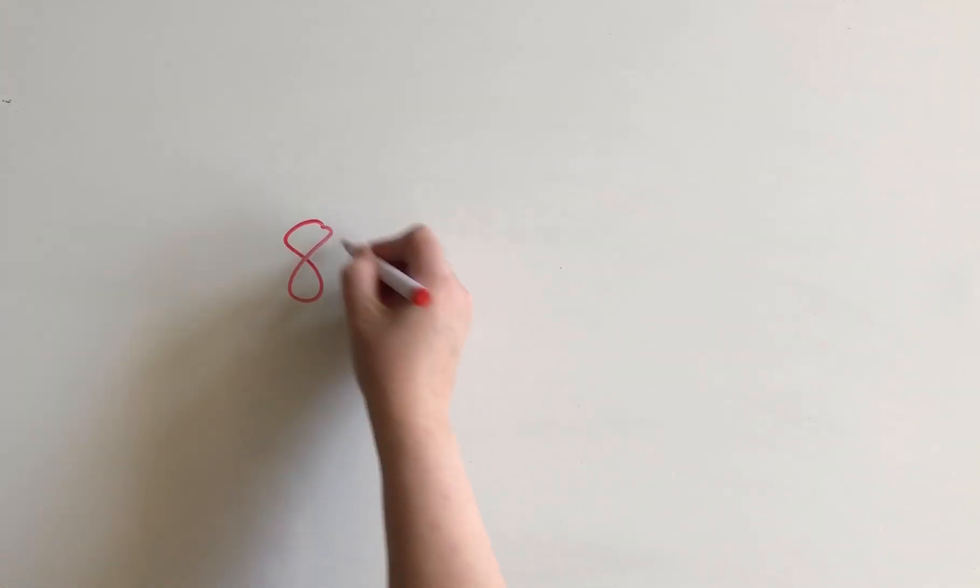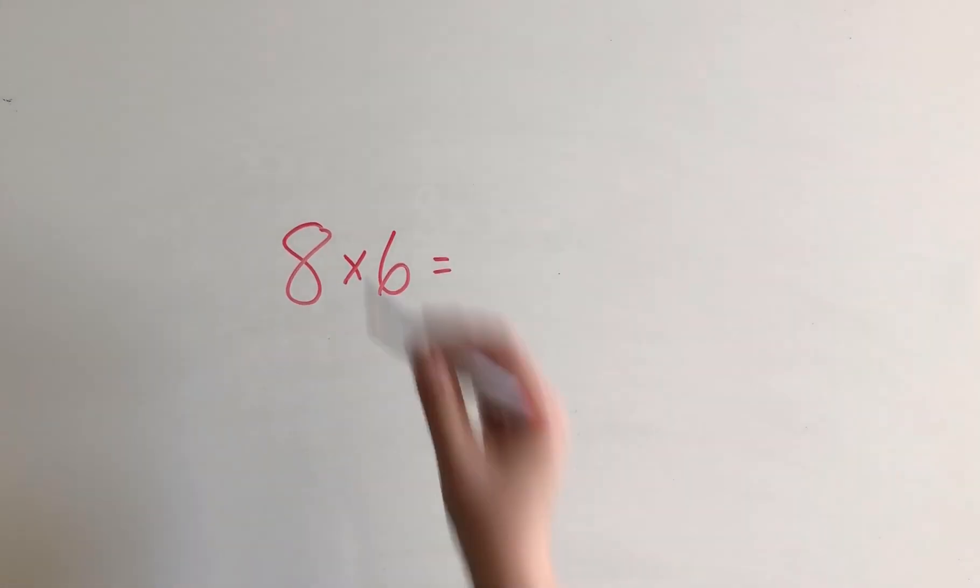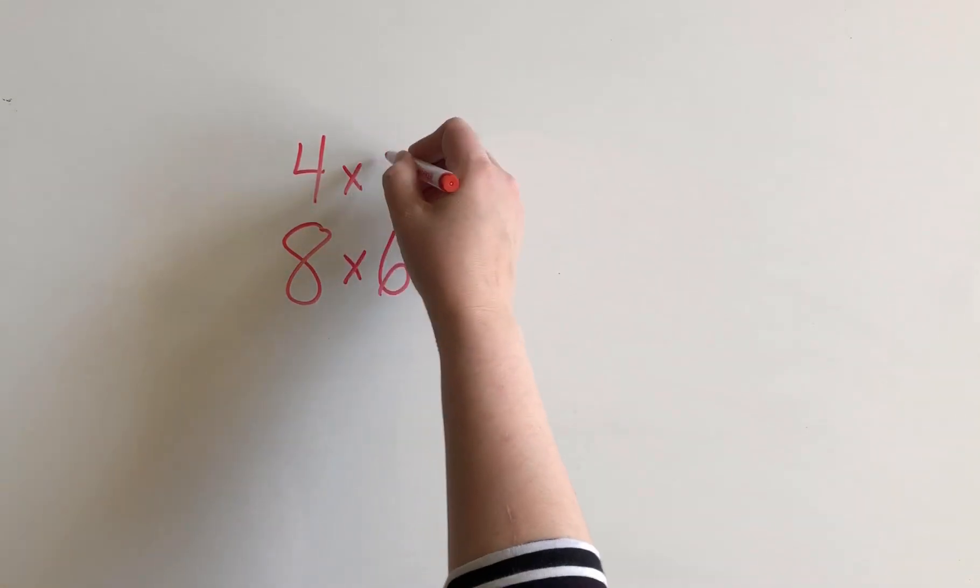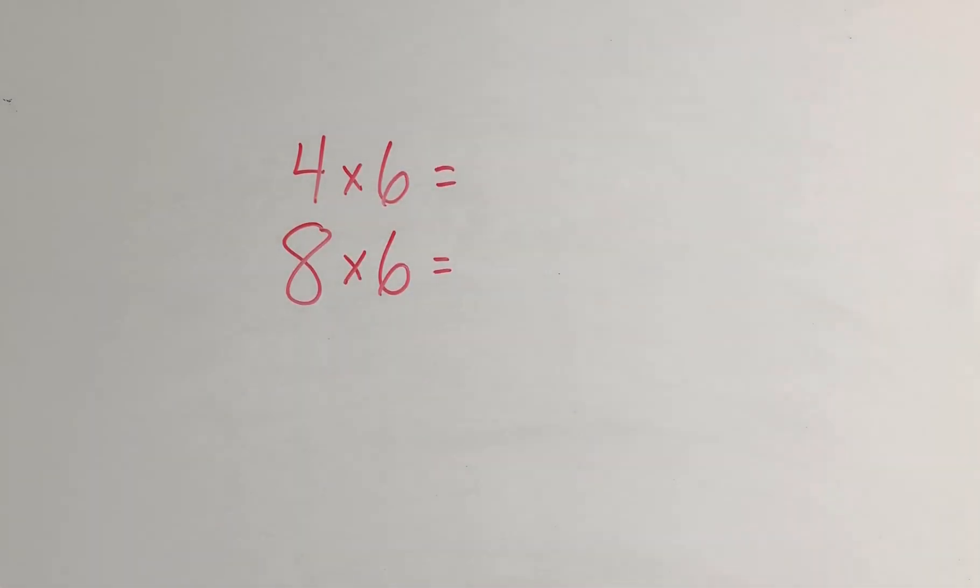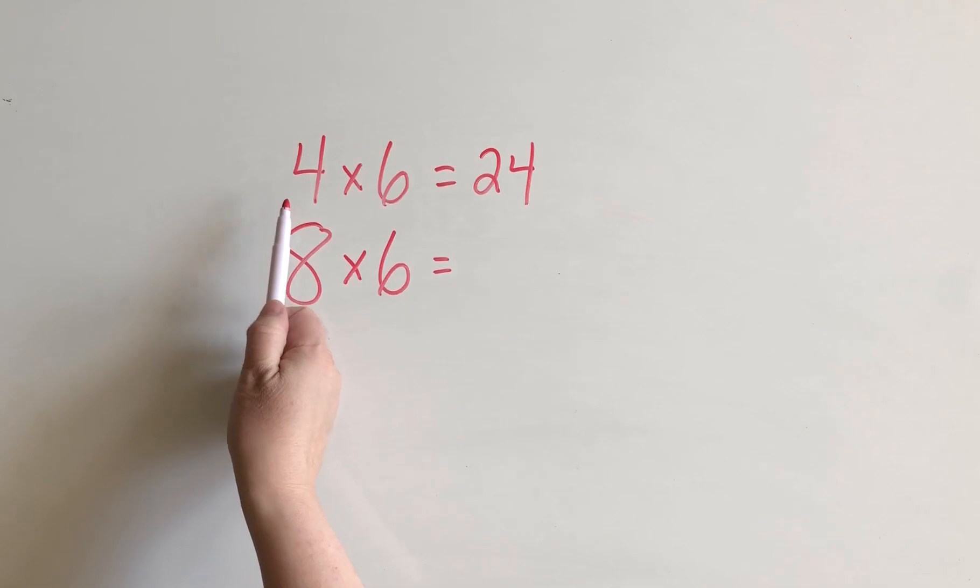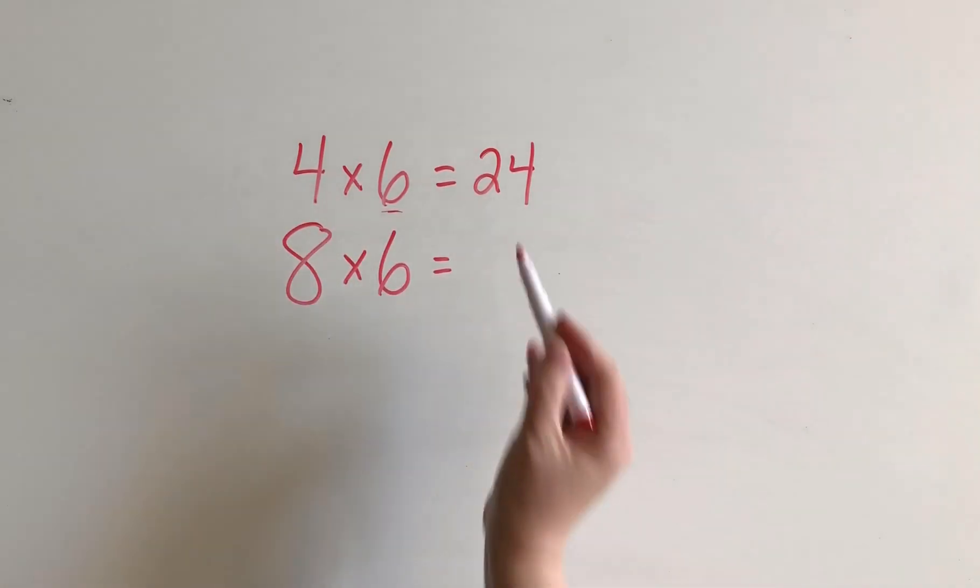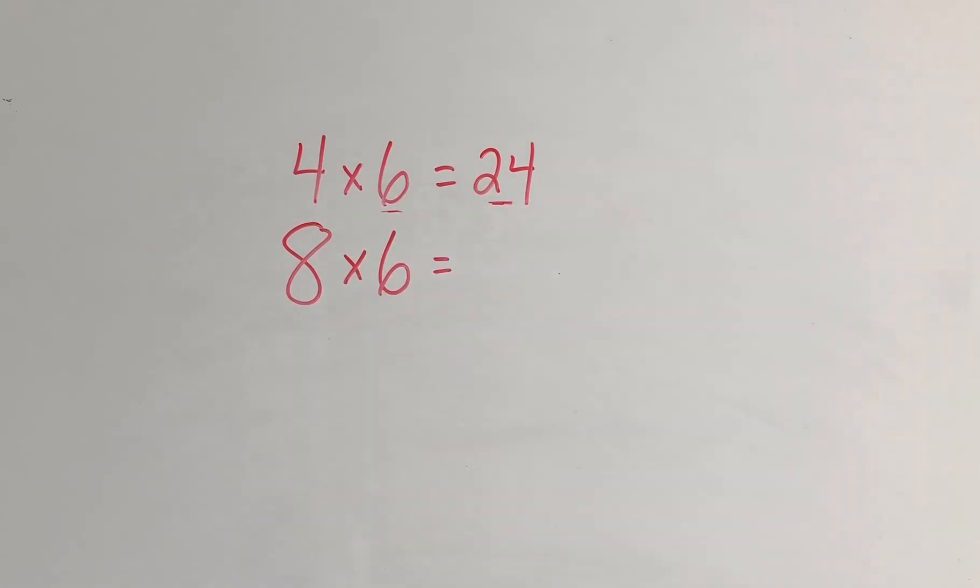So let's say I have 8 times 6. Well, let's first of all think about 4 times 6. And maybe I know that that's 24. So if I had 4 rows of chairs with 6 chairs in each row, that gives me 24 chairs.